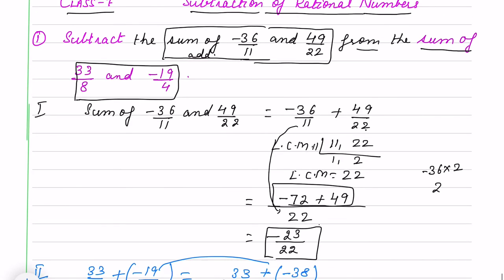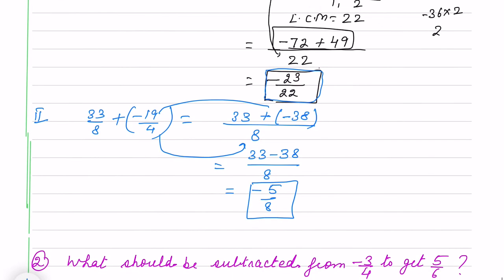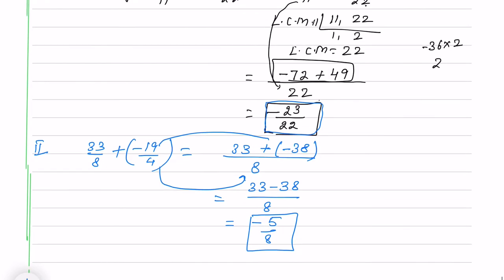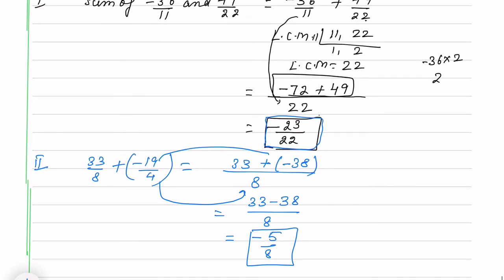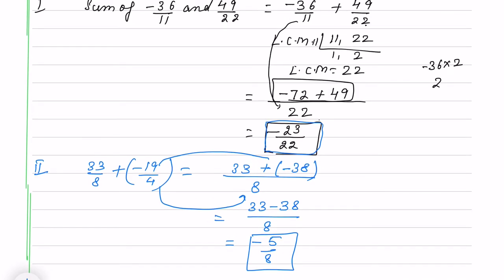Now go through the question. We have to subtract the sum of these numbers, means we have to subtract this one from minus 5 by 8. So third is minus 5 by 8 and then I am subtracting minus 23 by 22. I will take LCM again. It is 88. 8 times 11.